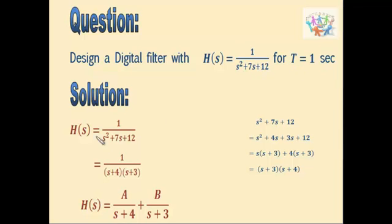Now from this, we have to factorize the denominator. In order to factorize, we would split 7s as 4s and 3s. We have to combine the first and third term and the second and fourth term, and after simplifying we will get s plus 3 into s plus 4.